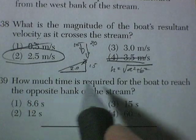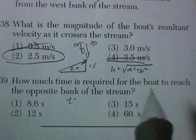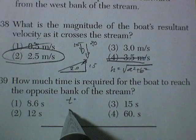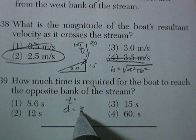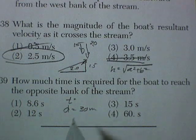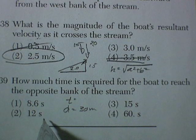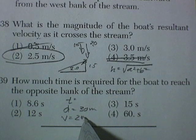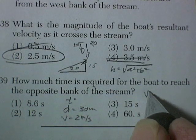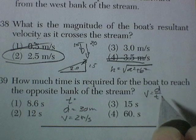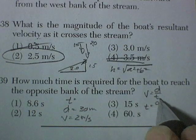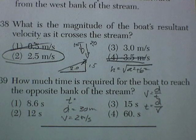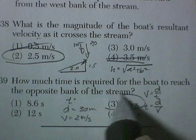Question 39. How much time is required for the boat to reach the opposite bank of the stream? Well, it's got to go a distance of 30 meters. And in fact, it will only be traveling in that direction at a velocity of 2 meters per second. So if velocity equals distance over time, time must be equal to distance divided by velocity. 30 meters divided by 2 meters per second gives us about 15 seconds of time.